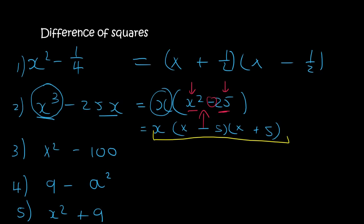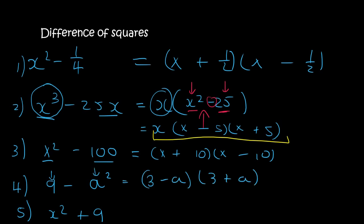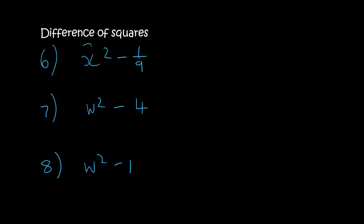For 9 minus A squared: 3 times 3 is 9, A times A is A squared, so the answer is (3 minus A)(3 plus A). For the next one — x squared plus 9 — it has a plus, so you can't do anything. The answer stays x squared plus 9. Remember, there must be a minus in between. For x squared minus 1 over 9: x times x is x squared, and 1 times 1 over 3 times 3 means one-third times one-third is one-ninth, so it's two brackets: x, x, one-third, one-third, one with a plus and one with a minus.